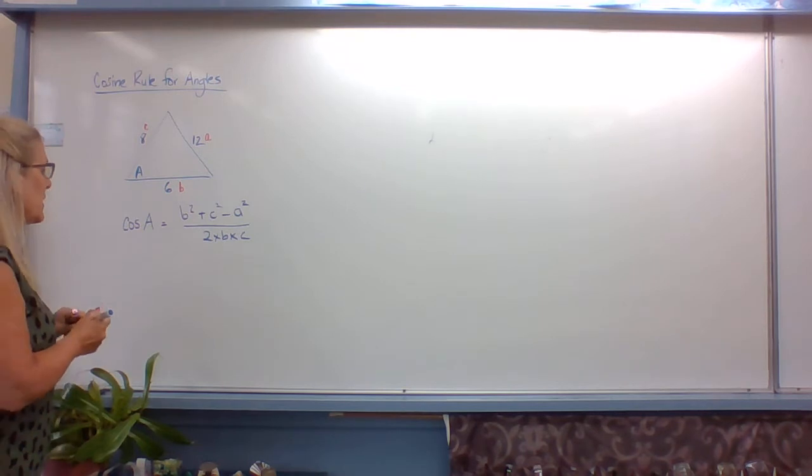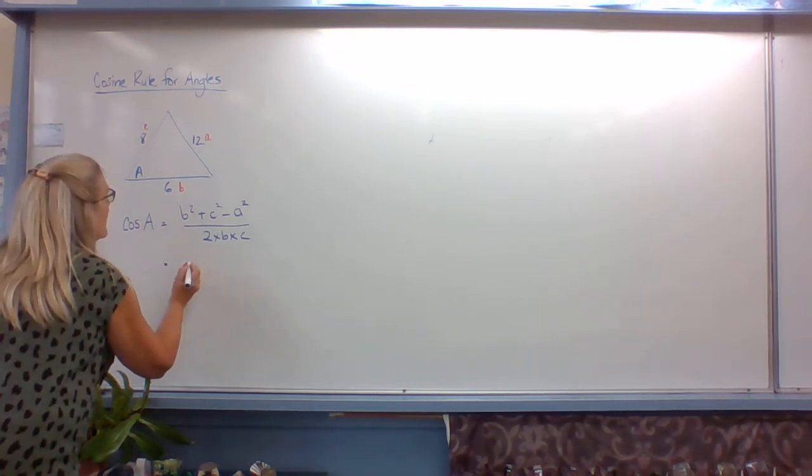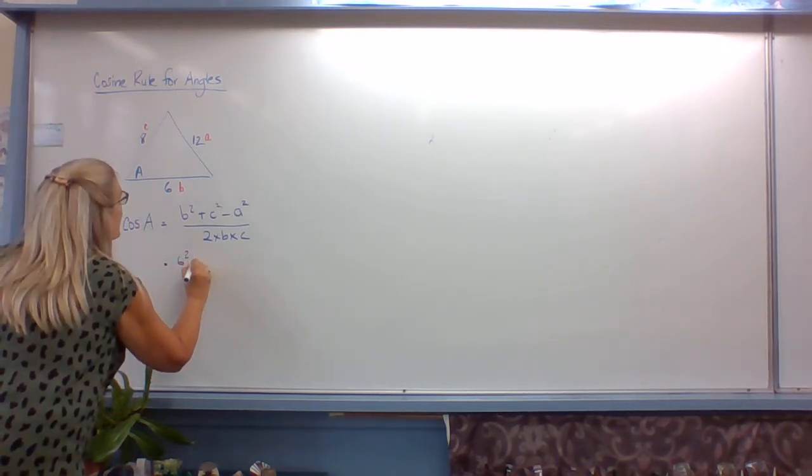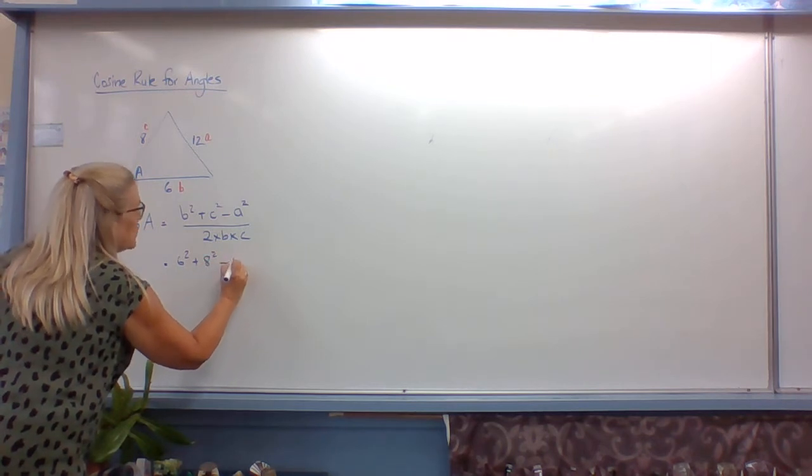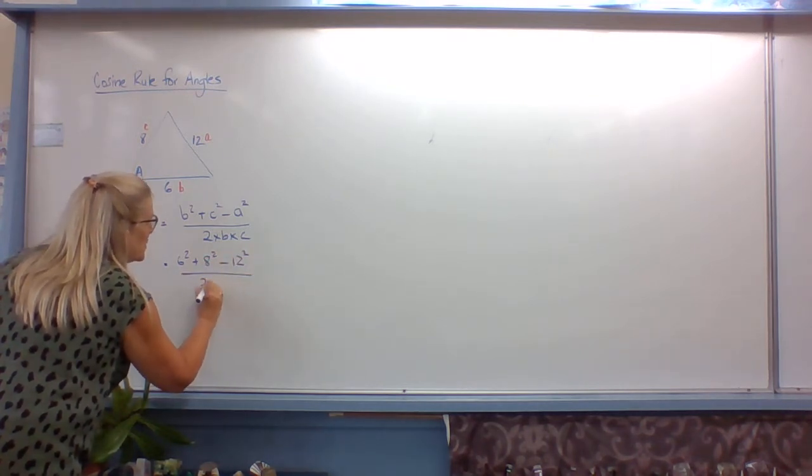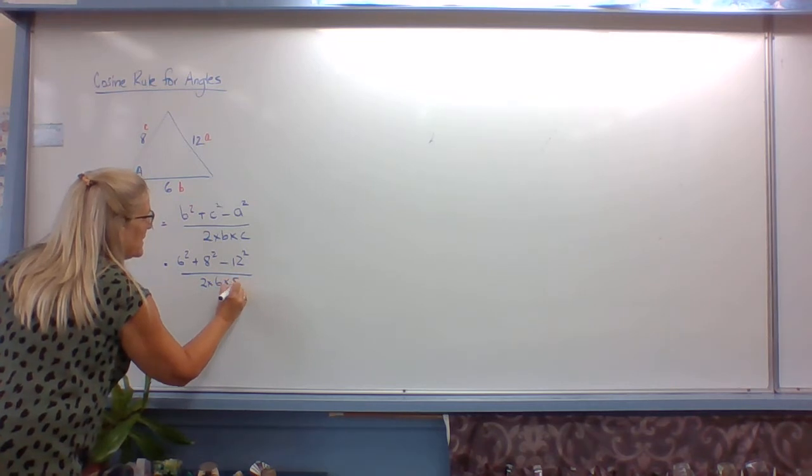So when we substitute in, we get 6 squared plus 8 squared minus 12 squared divided by 2 times 6 times 8.